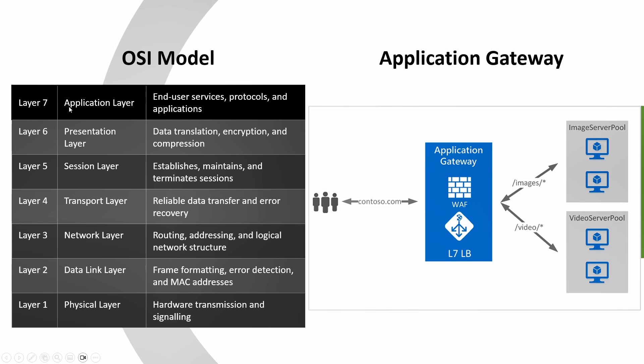Traditional load balancers mostly work on layer 3 and layer 4, which are the network layer and transport layer. That means all the routing happens only on the basis of source port, destination port, source IP address and destination IP address. However, Application Gateway is an intelligent load balancer because it works on the application layer, routing traffic based on incoming HTTP attributes like host path-based routing, URI-based routing, or host headers.